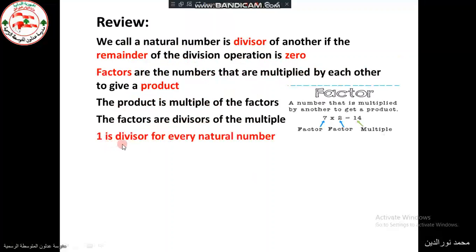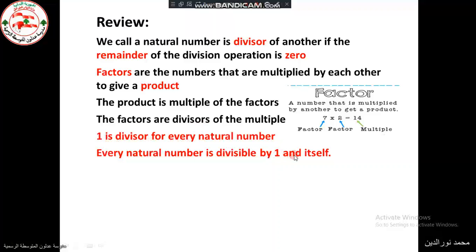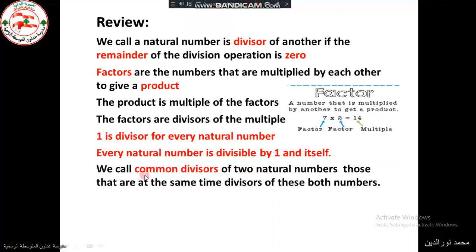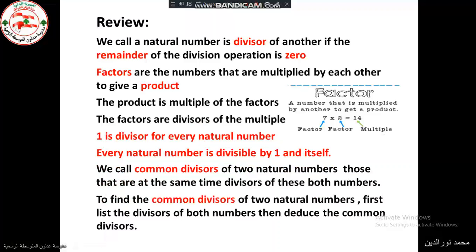1 is a divisor of every natural number, and every natural number is divisible by 1 and by itself. We call common divisors of two natural numbers those that are at the same time divisors of these numbers. To find them, first list the divisors of both numbers, then deduce the common divisors.